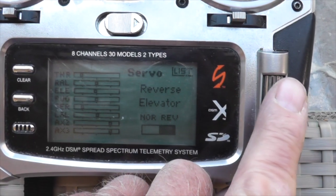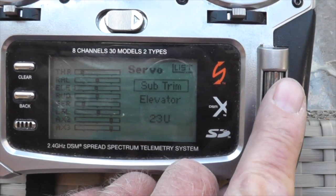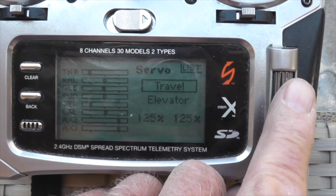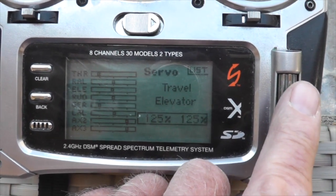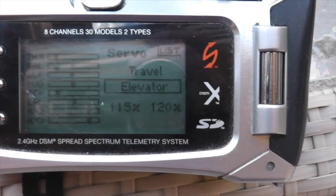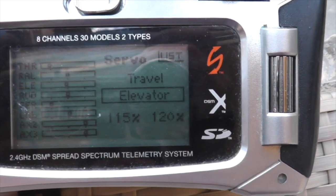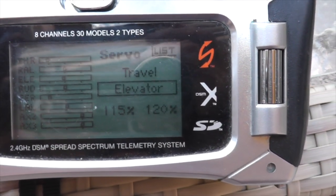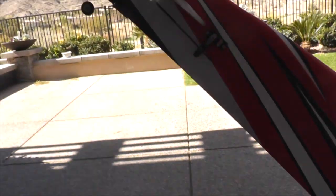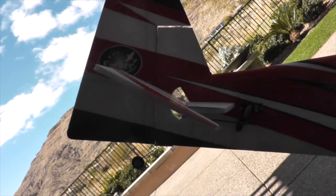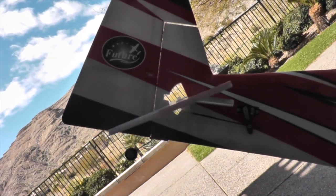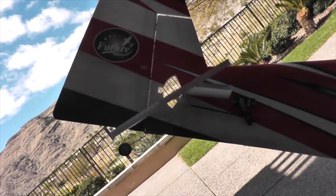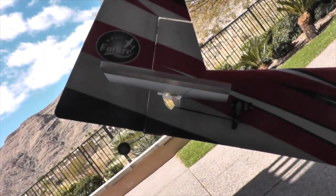Now we can do our travel, we'll switch it over to travel. And I'll go ahead and adjust it. Ended up with 115% down and 120% up adjustment, and that looks pretty good. I like it right up against the stops, full travel but not binding. That's going to be great.